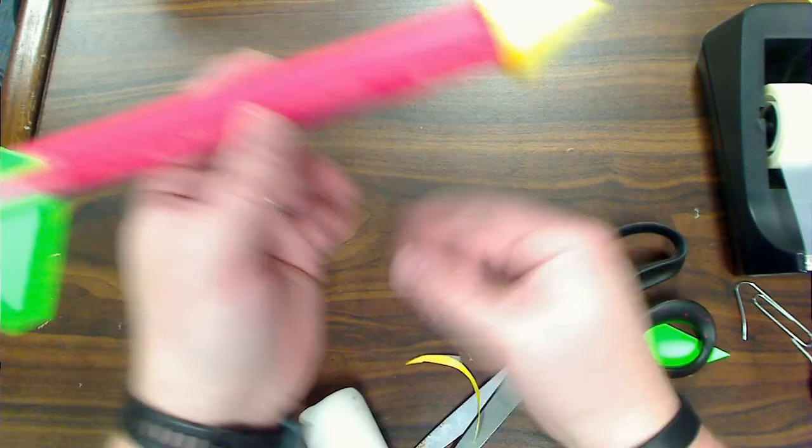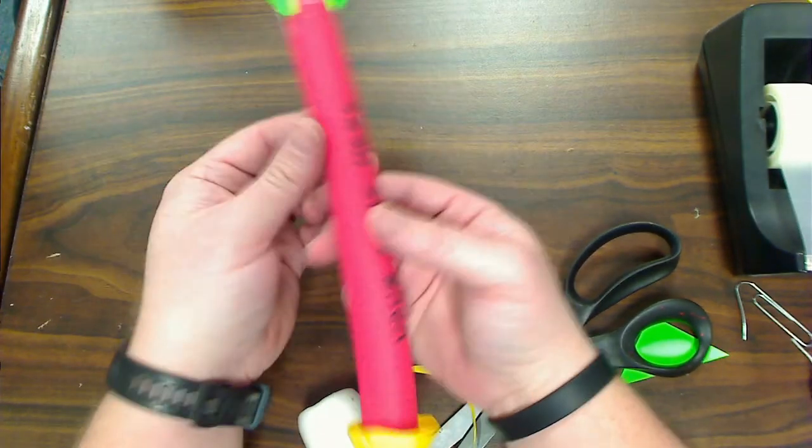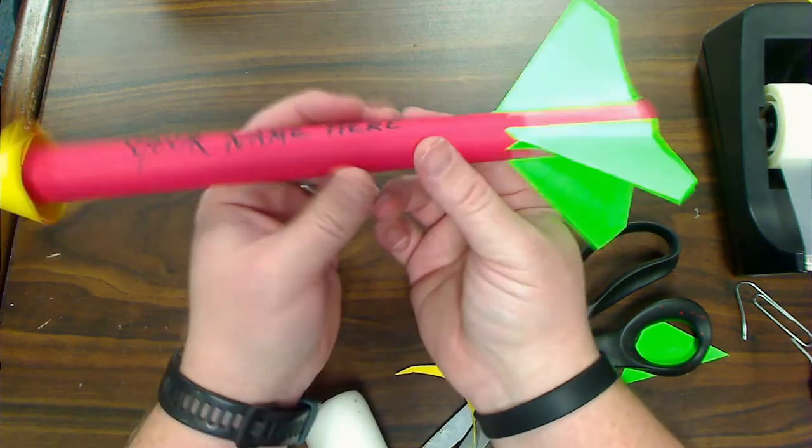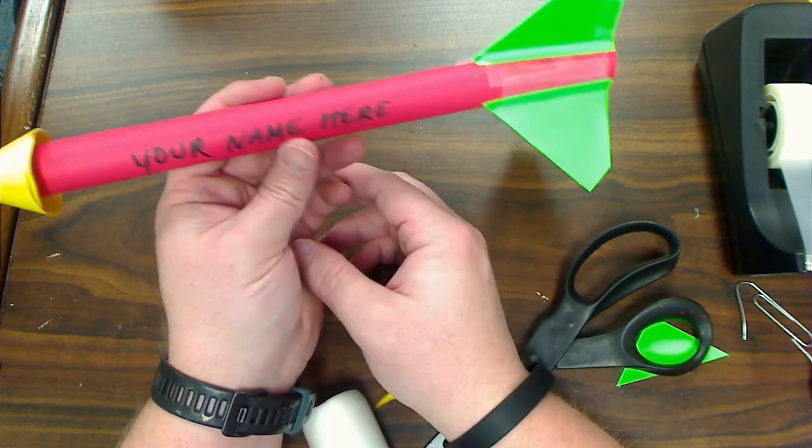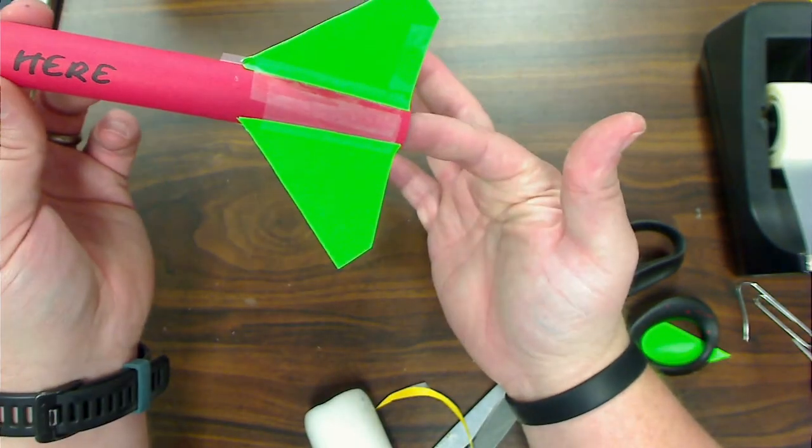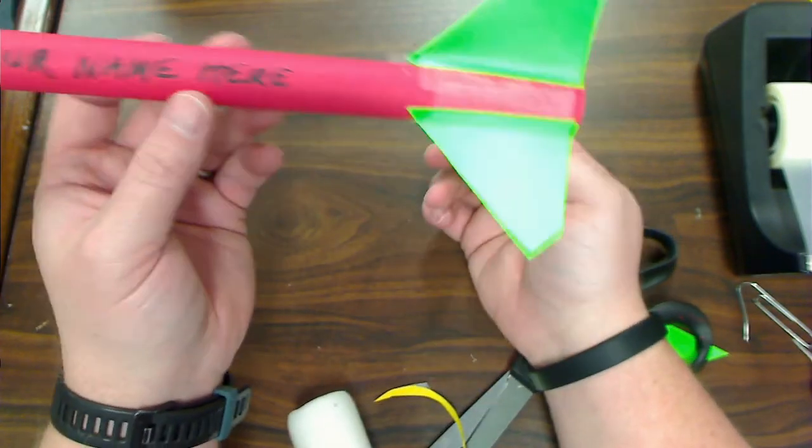So this is what your rocket is going to end up looking like when you're finished with it. These are one-time use rockets, but they are a lot cheaper to create than the old solid fuel rockets. We will put this on a pneumatic air pump and we will launch them here in a few days.